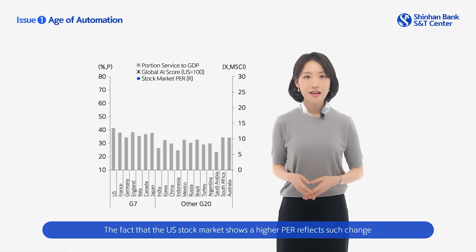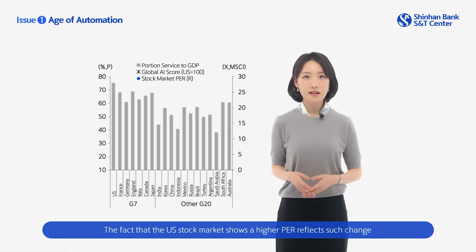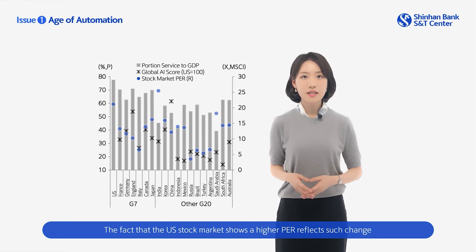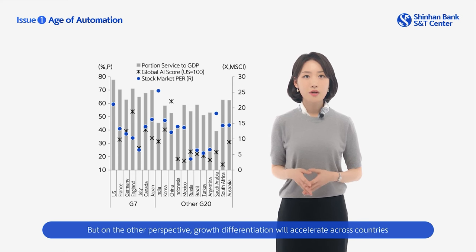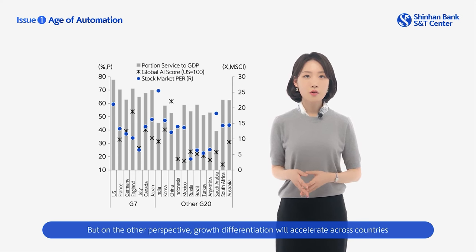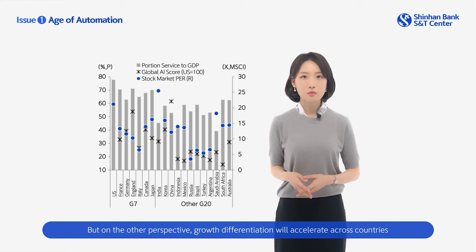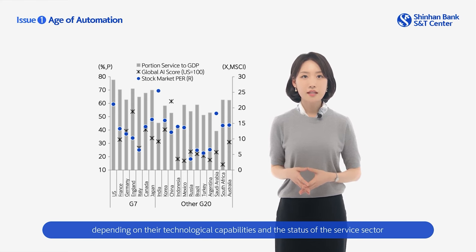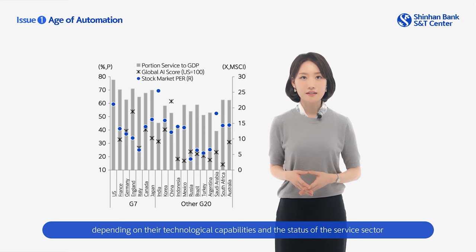The fact that the U.S. stock market shows a higher P/E ratio reflects such change. On the other perspective, growth differentiation will accelerate across countries depending on their technological capabilities and the status of the service sector.